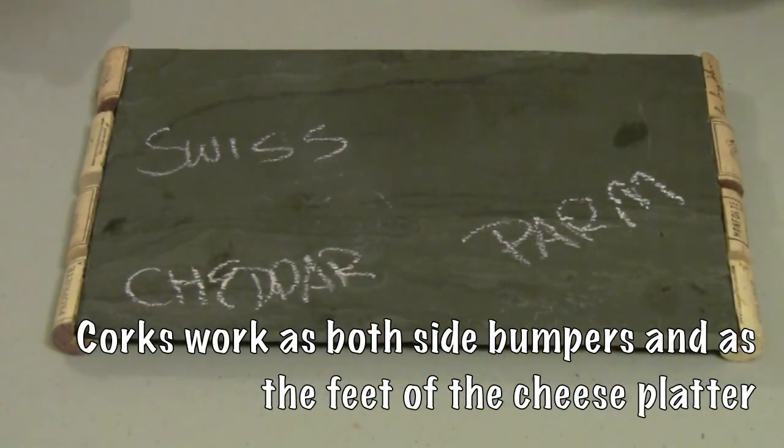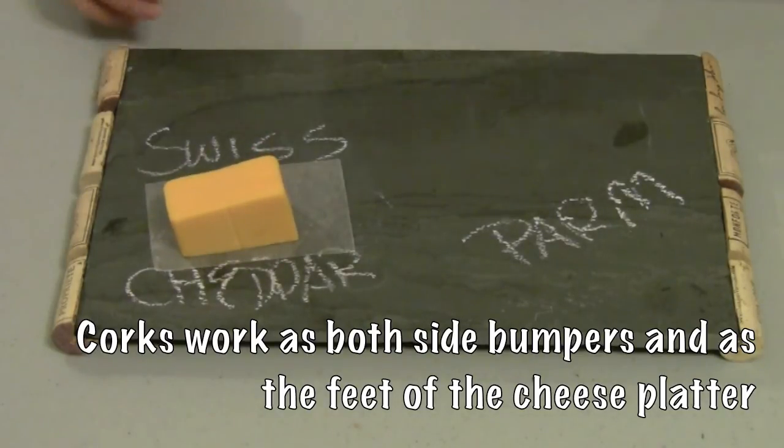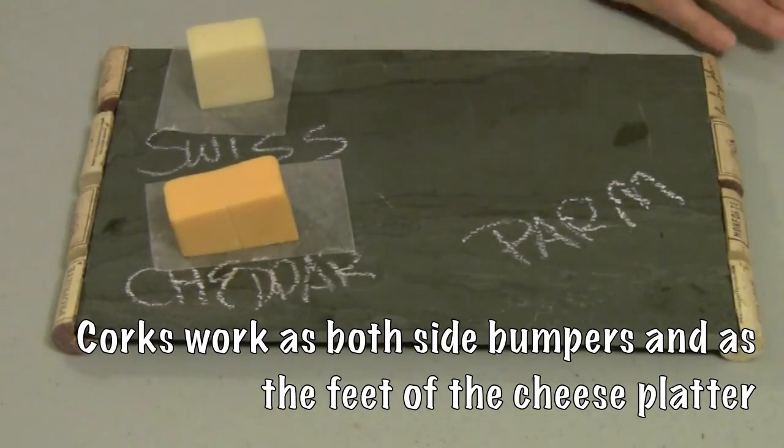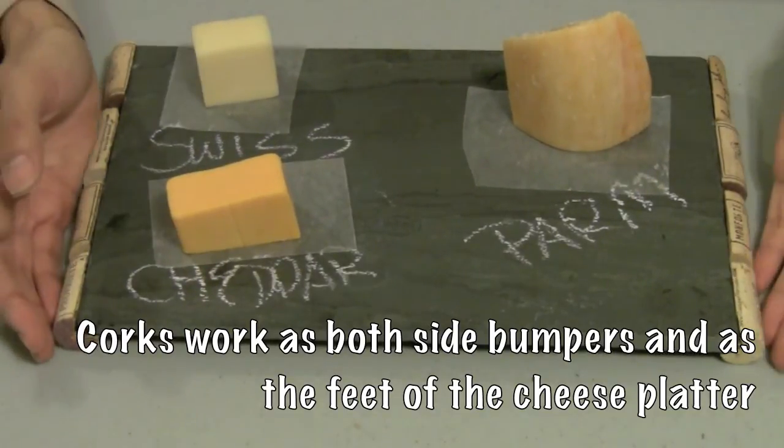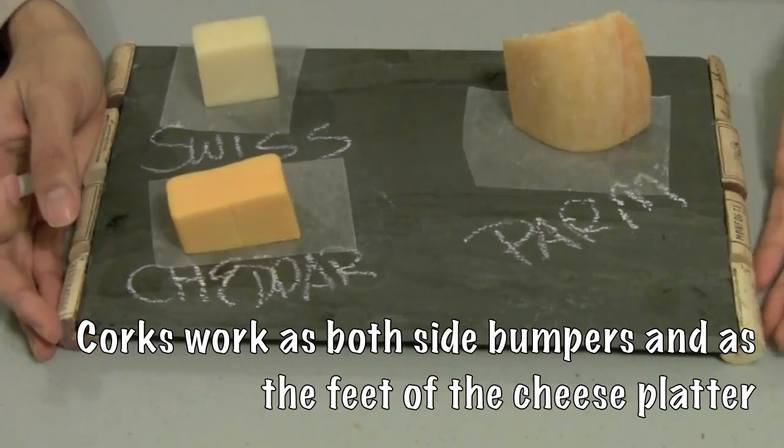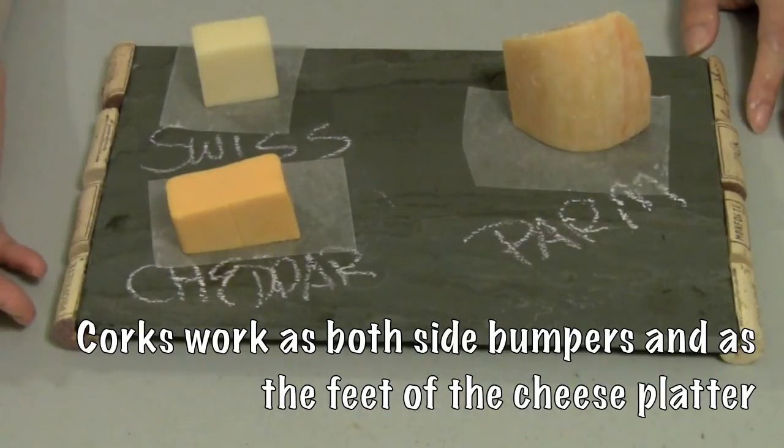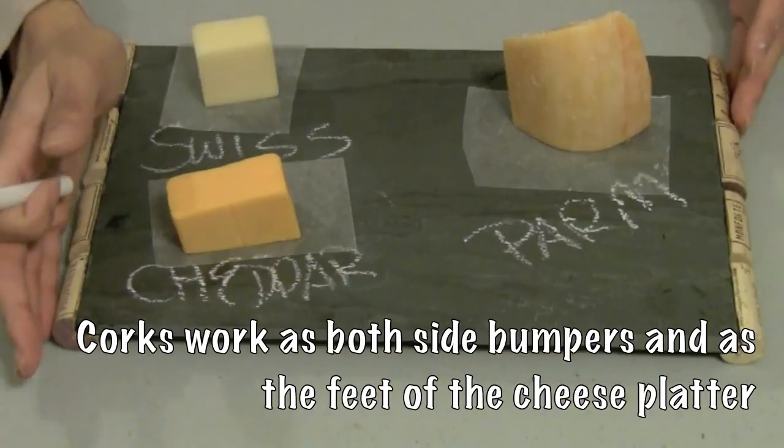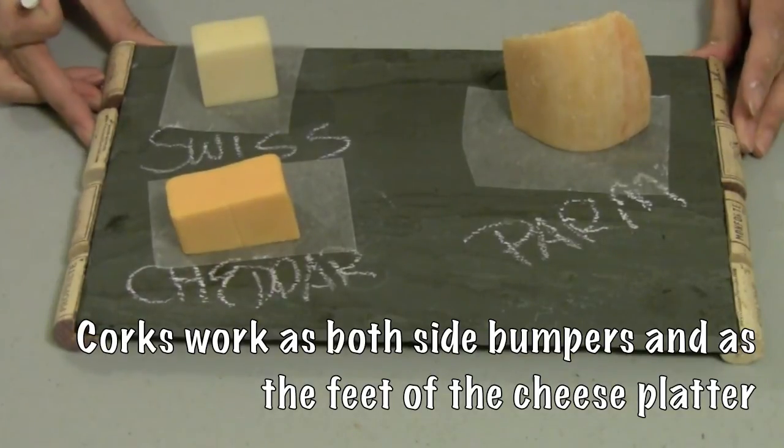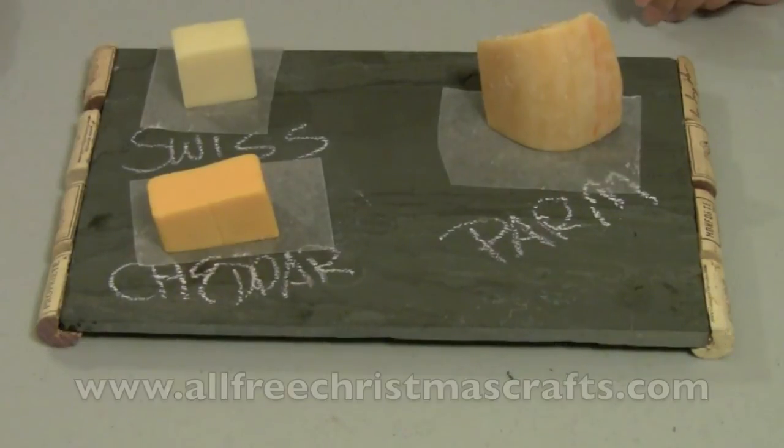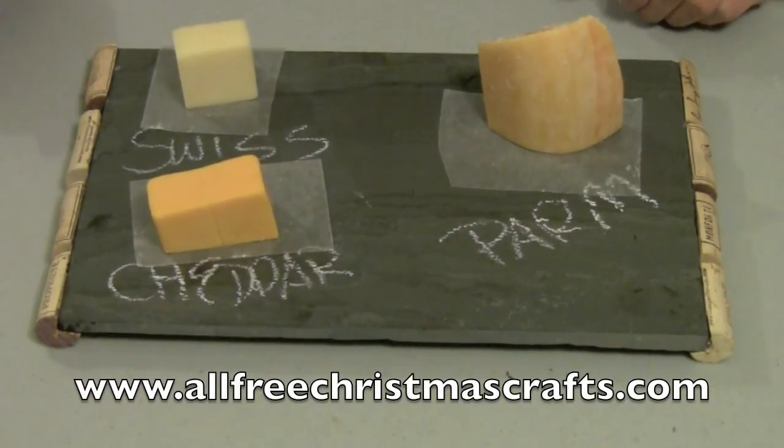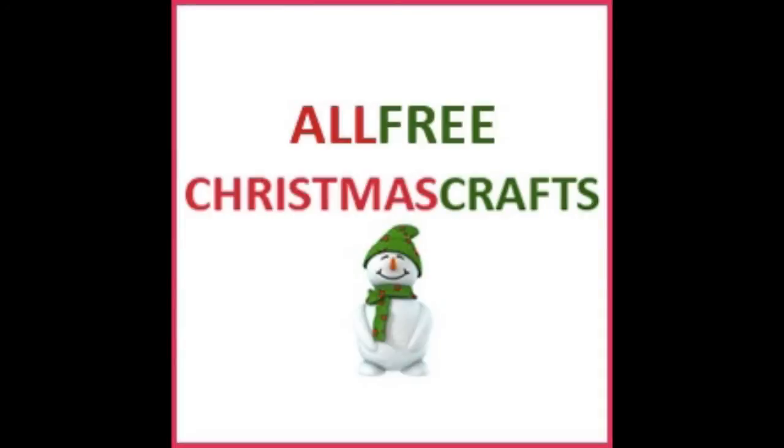And then I'll put down my cheese. So I've got my cheddar cheese, my Swiss cheese and my Parmesan cheese right here. And I've made this beautiful cheese platter out of a slate tile and wine corks. These serve as the bumper as well as kind of a trivet to lift up your cheese plate. This video has been brought to you in partnership with www.allfreechristmascrafts.com.